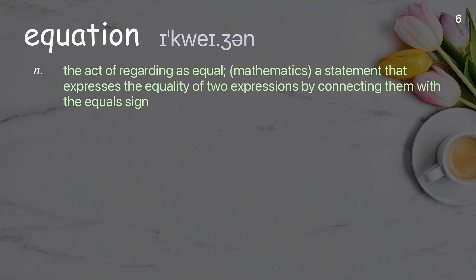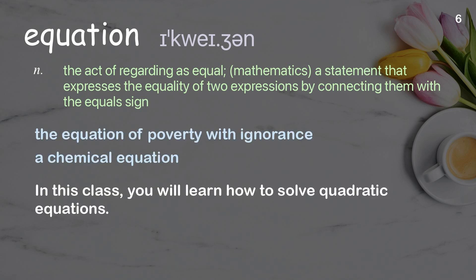Equation: the act of regarding as equal; in mathematics, a statement that expresses the equality of two expressions by connecting them with the equal sign. Examples: the equation of poverty with ignorance, a chemical equation. In this class you will learn how to solve quadratic equations.